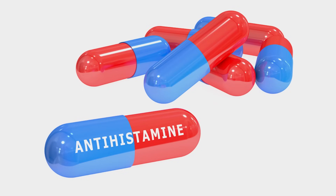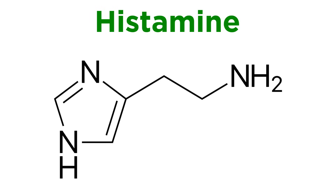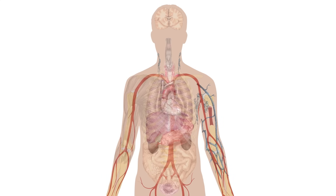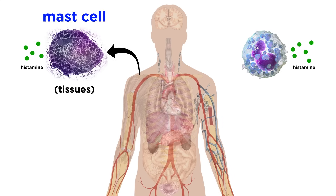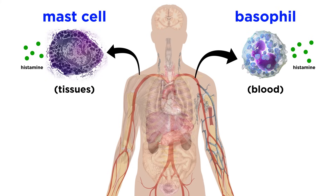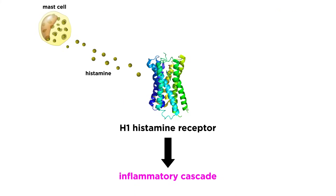To understand how antihistamines alleviate allergies, we must understand more about histamine, which is this nitrogenous compound here. Within the immune system, histamine is released by mast cells in our tissues and basophils in our blood, which are cells we described in detail in the immunology series. This process initiates an inflammatory cascade, and a series of effects mediated primarily through the H1 histamine receptor.